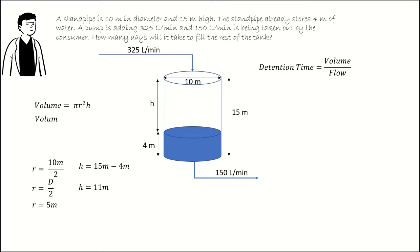Substituting these values for r and h into our equation, the volume is equal to 3.14 times 5 meters squared times 11 meters. Simplifying it further, volume is equal to 3.14 times 25 meters squared times 11 meters. The volume of our tank is 863.5 meters cubed.